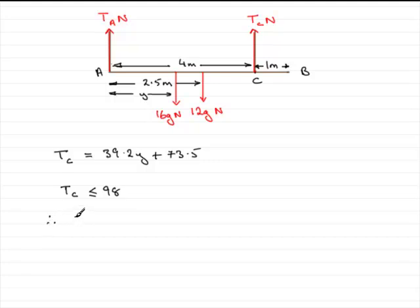So therefore what happens is that we've got 39.2y plus 73.5 has got to be less than or equal to 98.